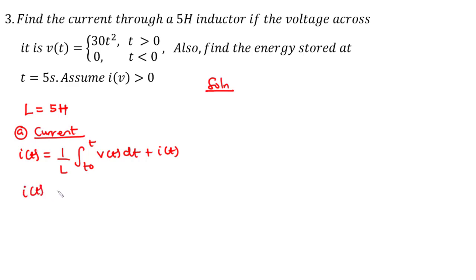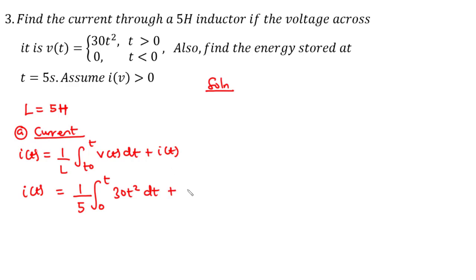So i(t) is equal to one over L, where L is 5. The voltage is 30t² when t is greater than zero, and zero when t is less than zero. Since we are only interested in t greater than zero, we perform integration over the interval from zero to t of 30t² dt, and the initial current is zero.